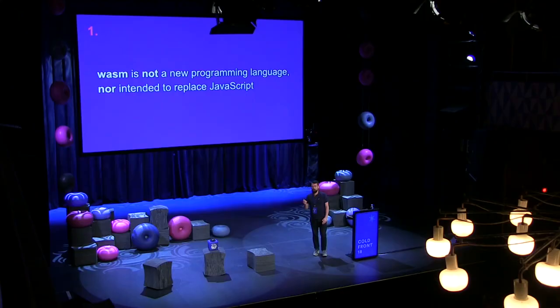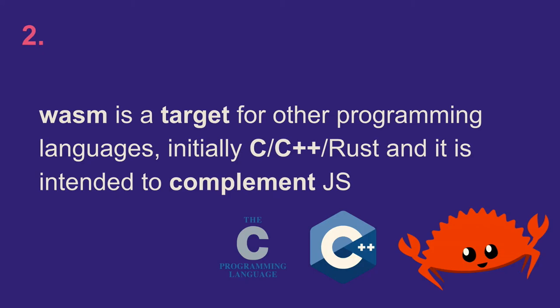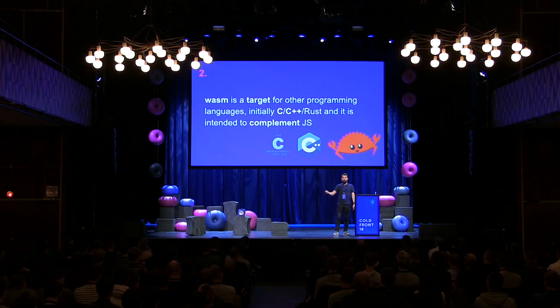So is this a replacement for JavaScript? No, it's actually not. WebAssembly is not a new programming language, and neither is it intended to replace JavaScript. Instead, it's a compiled target for existing programming languages such as C, C++, and Rust — currently mostly languages that don't require garbage collection. Garbage collection will be supported in the future, so you could expect to run .NET, Python, and the like.